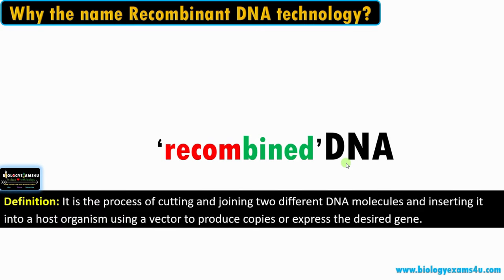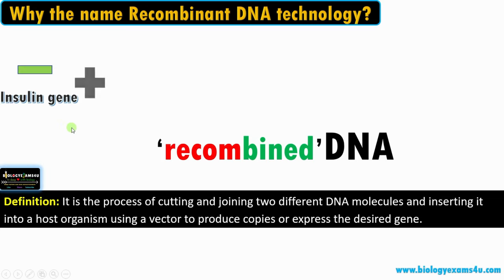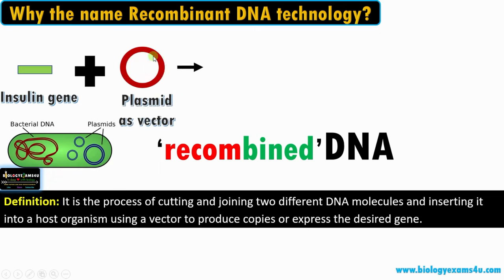Recombinant DNA technology is a process of cutting and joining of two different DNA molecules and inserting it into a suitable host organism using a vector to produce copies or to express the desired gene. Suppose we have a human insulin gene. The second part is we have a vector — the most common vector is plasmid. Plasmids are extra-chromosomal double-stranded circular DNA molecules present in bacteria, widely used as gene cloning vectors. A vector is simply a DNA molecule that carries our desired gene.